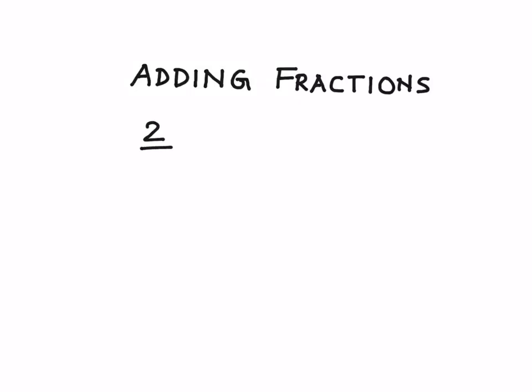Let's say we want to add 2 by 3 and 4 by 3. If you look at these two fraction numbers, they both have got the same denominator. So such fractions are called like fractions.